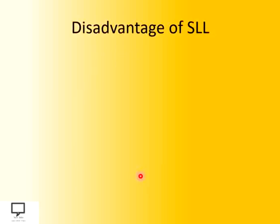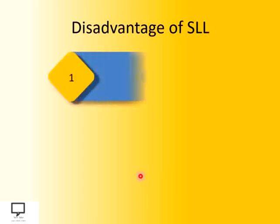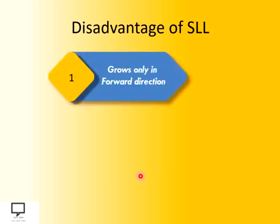Now let's see first of all what are the disadvantages of SLL, that is singly linked list. The first disadvantage is SLL grows only in the forward direction. We have gone through the concept of SLL in previous video series where I explained the linked list and its first type is SLL, with all operations in detail. From that you must have come to know that SLL having a single link which grows in the forward direction only.